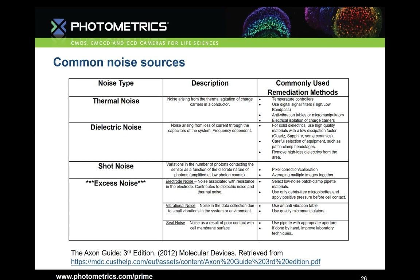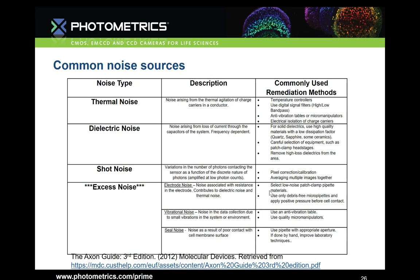Vibrational noise is noise in the data due to small vibrations in the system. Selecting fanless equipment can help, as can using an anti-vibration table and quality micro-manipulators. The selection of the area used to conduct your experiment can also play a major role — if your laboratory is nearby a construction site, a generator, or an elevator, these should all be carefully minimized. Seal noise results from poor contact between the cell membrane and the pipette. Improving laboratory technique by applying positive pressure as your pipette tip approaches the cell, then applying a small amount of negative pressure to make your gigaohm seal, can help reduce the amount of seal noise.